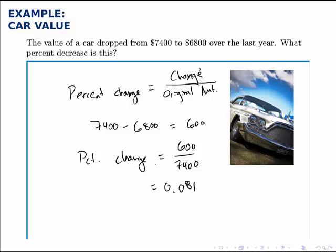But the question asked about a percentage change, so we need to rewrite this decimal in terms of a percent by moving the decimal point two places to the right. So our answer is that the price of the car dropped by 8.1%.